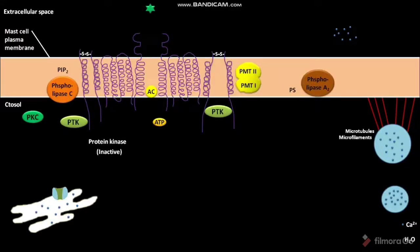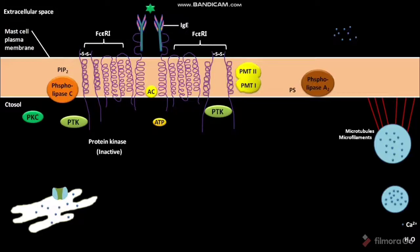On the mast cell plasma membrane, FC-Epsilon-RI receptors are present. In type 1 hypersensitivity reaction, IgEs first bind to these FC-Epsilon-RI receptors. The IgE binding results in a sensitized mast cell. Whenever the allergen binds to these IgEs for a second time, the IgEs are cross-linked. Due to this cross-linkage, the FC-Epsilon-RI receptors undergo aggregation.